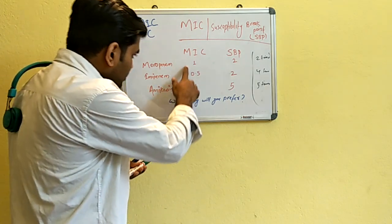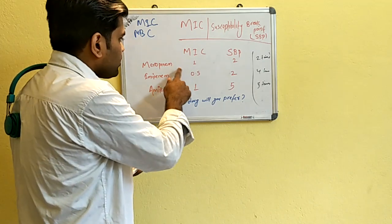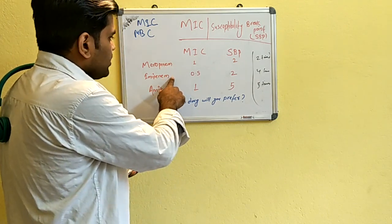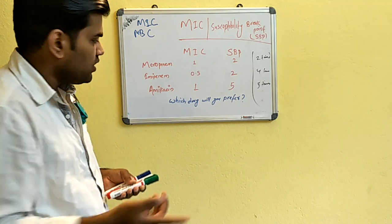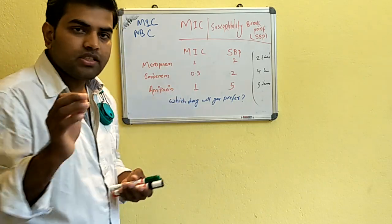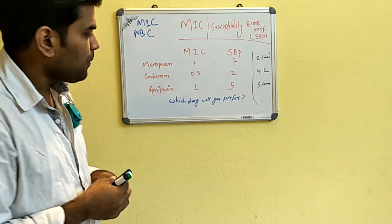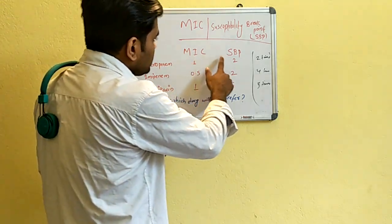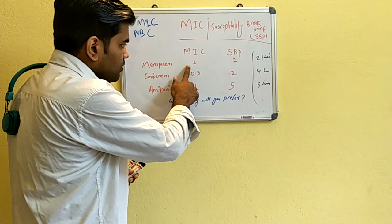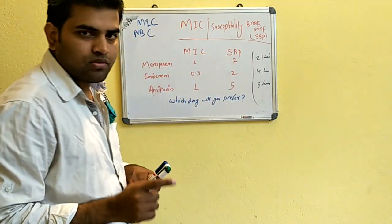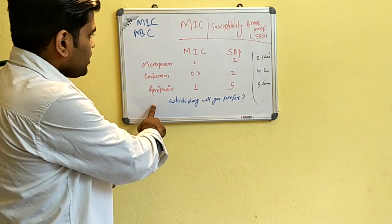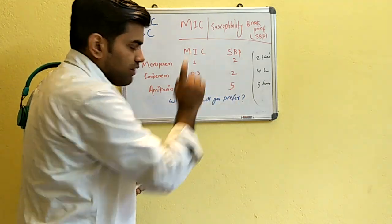The key concept is that you do NOT compare the MIC of one drug against the MIC of another drug. You must compare each drug's MIC against its own susceptibility breakpoint. Meropenem: MIC 1, SBP 2 — so the MIC is 2 times below the breakpoint. Imipenem: MIC 0.5, SBP 2 — so it is 4 times below. Amikacin: MIC 1, SBP 5 — so it is 5 times below the breakpoint.